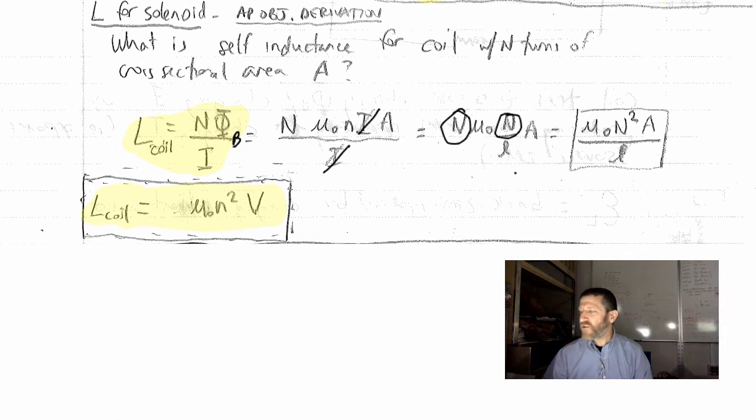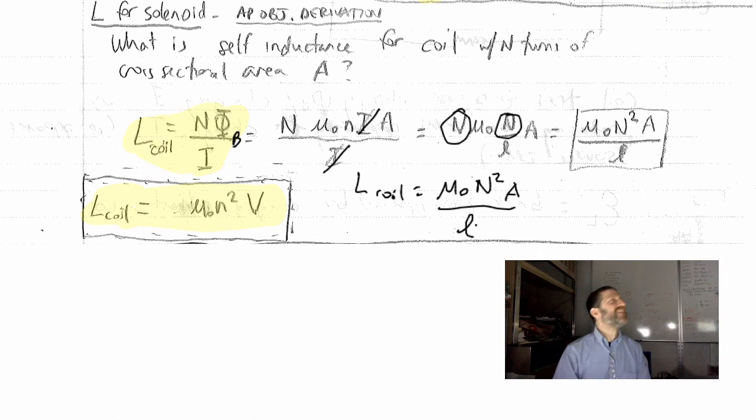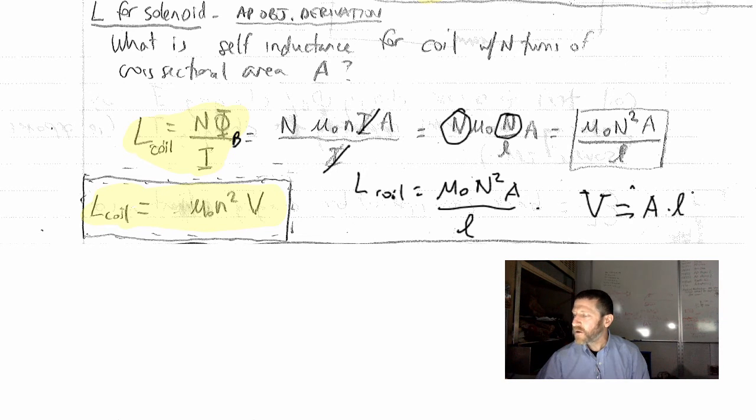I'm going to take what I have originally here. I've got my L of my coil is μ₀n² times A over l. What is the volume of your coil? Volume equals A times l. If you solve for A,